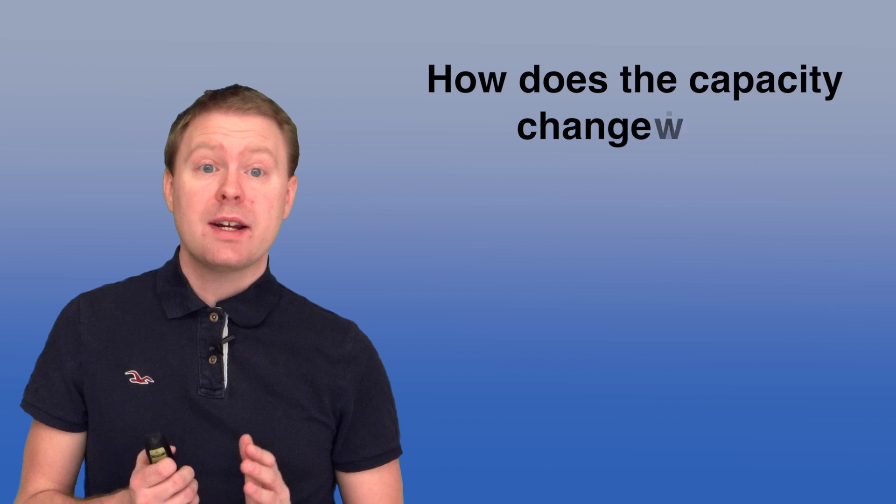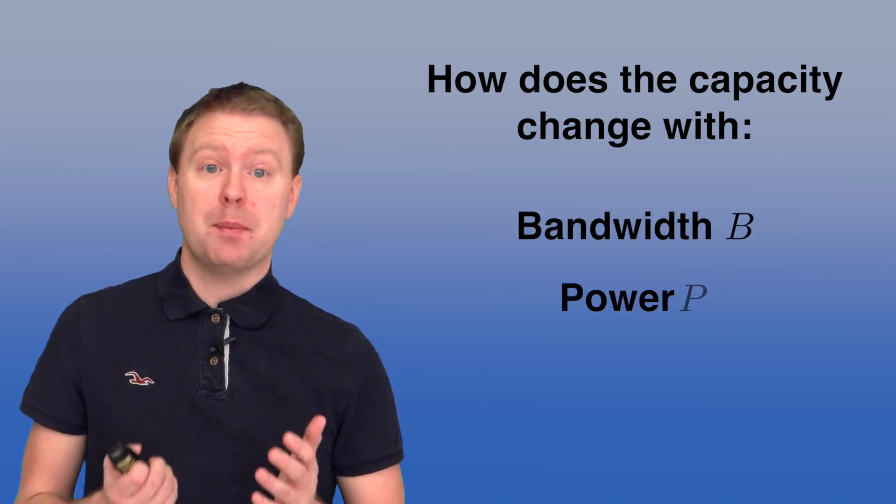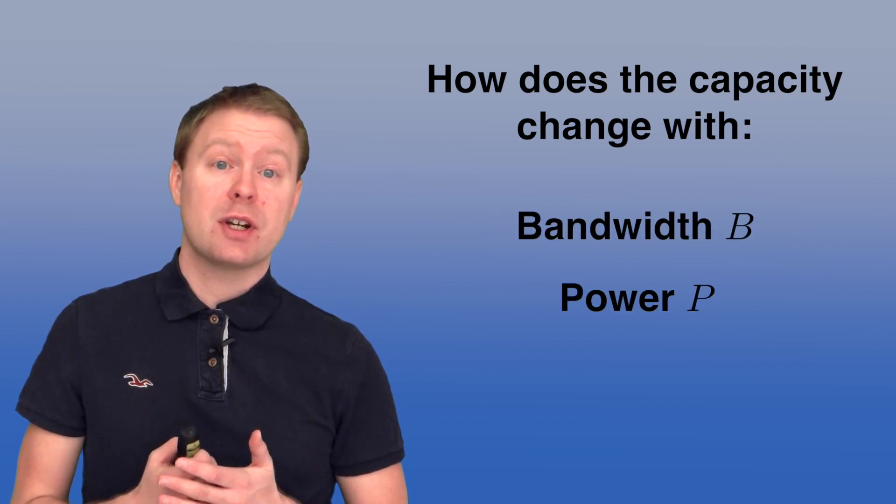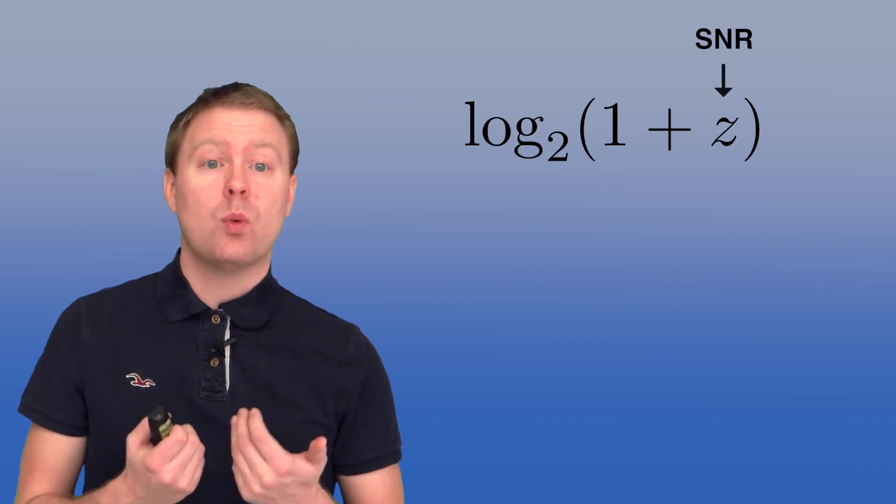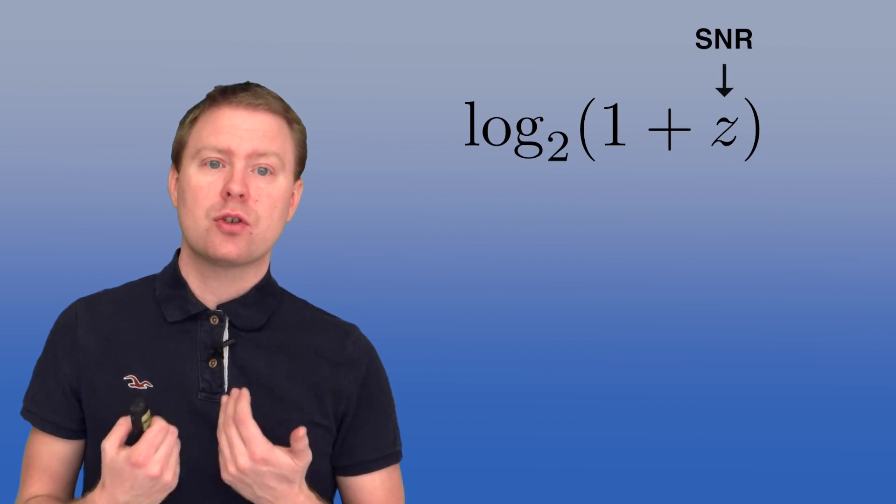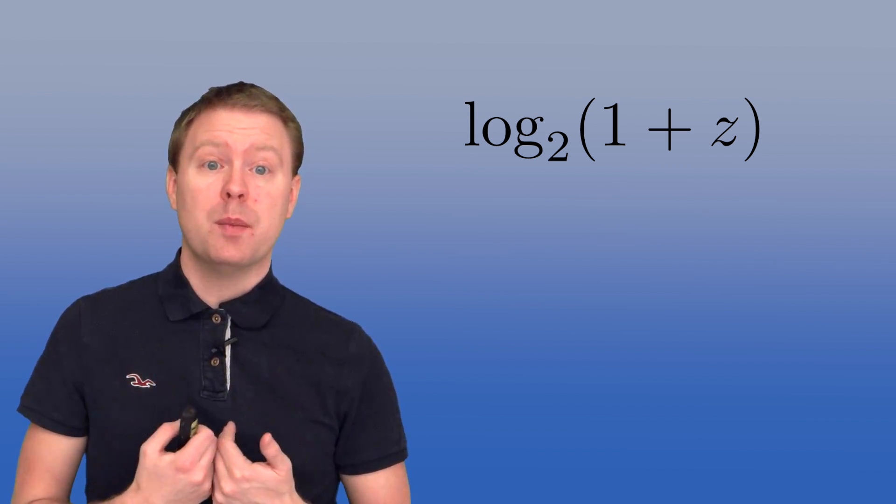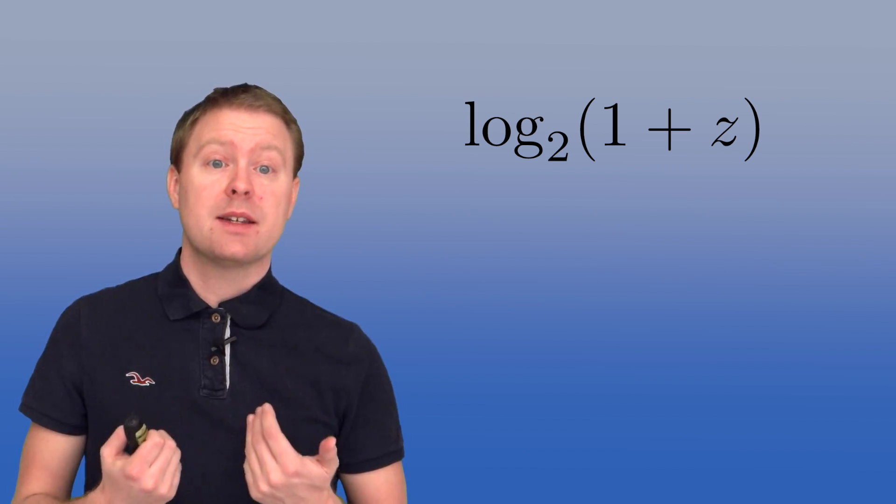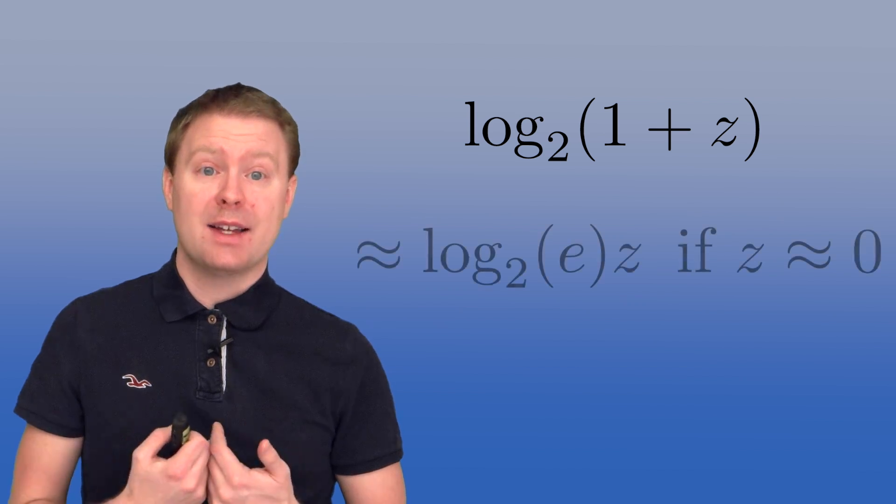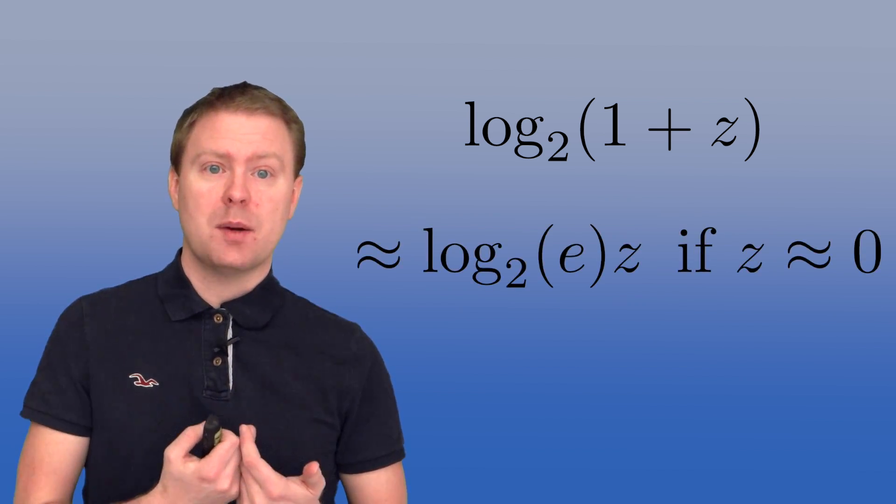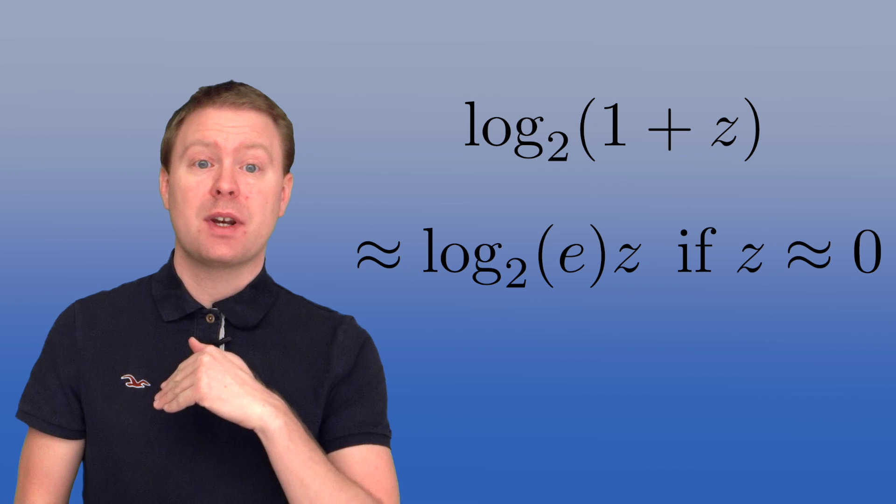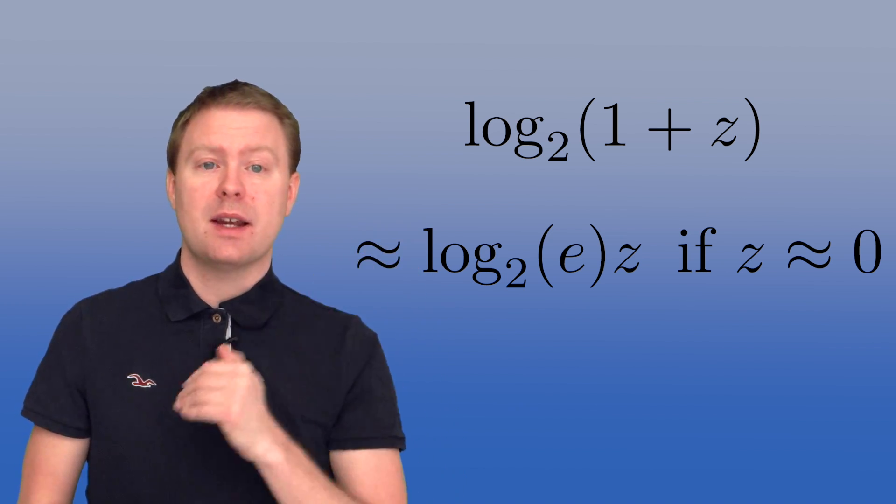How does the capacity change when we are changing the bandwidth and the power, which are two variables that we actually can select in real systems? To understand that, let's first look at the power and consider how the log2 of 1 plus the SNR behaves. Let's write that as log2 of 1 plus Z. And if Z is a small number, then log 1 plus Z can be written as log2 of Euler's number e multiply with Z. So it's something that grows linearly when Z is small.